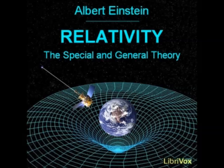Mathematicians have been confronted with our problem in the following form. If we are given a surface, e.g. an ellipsoid, in Euclidean three-dimensional space, then there exists for this surface a two-dimensional geometry just as much as for a plane surface. Gauss undertook the task of treating this two-dimensional geometry from first principles without making use of the fact that the surface belongs to a Euclidean continuum of three dimensions. The surface is not a Euclidean continuum with respect to the rods, and we cannot define Cartesian coordinates in the surface. Gauss indicated the principles according to which we can treat the geometrical relationships in the surface, and thus pointed out the way to the method of Riemann of treating multidimensional non-Euclidean continua.